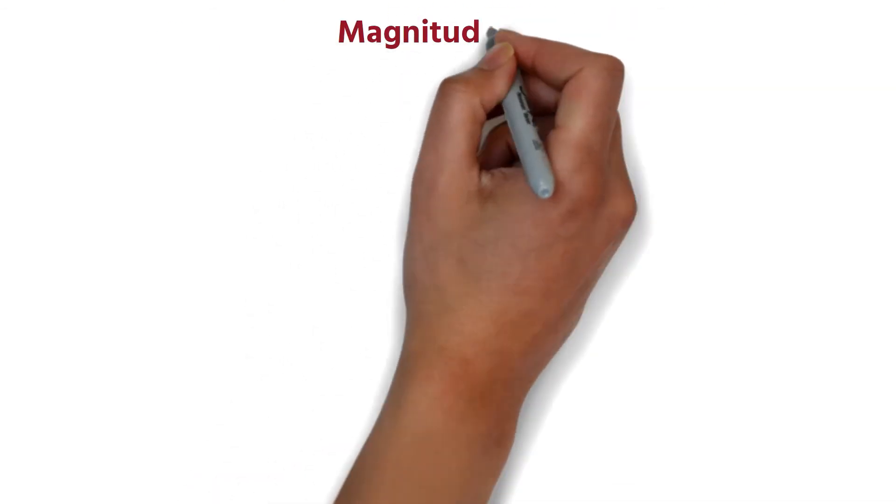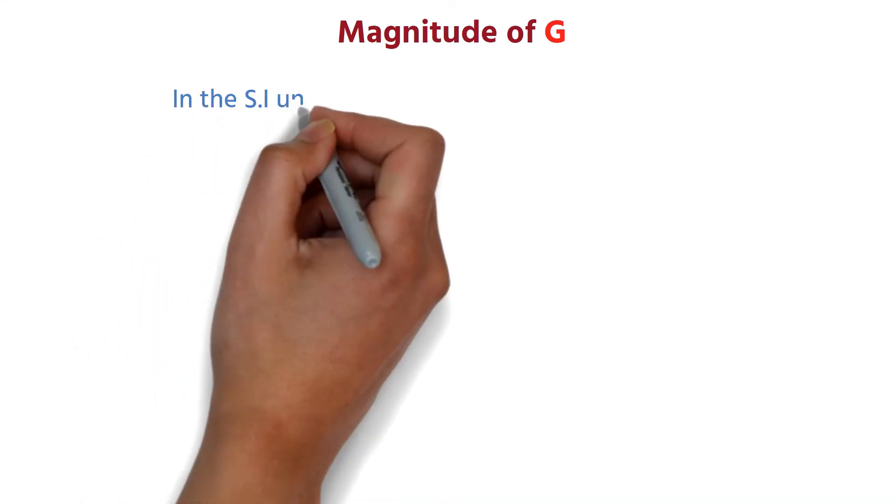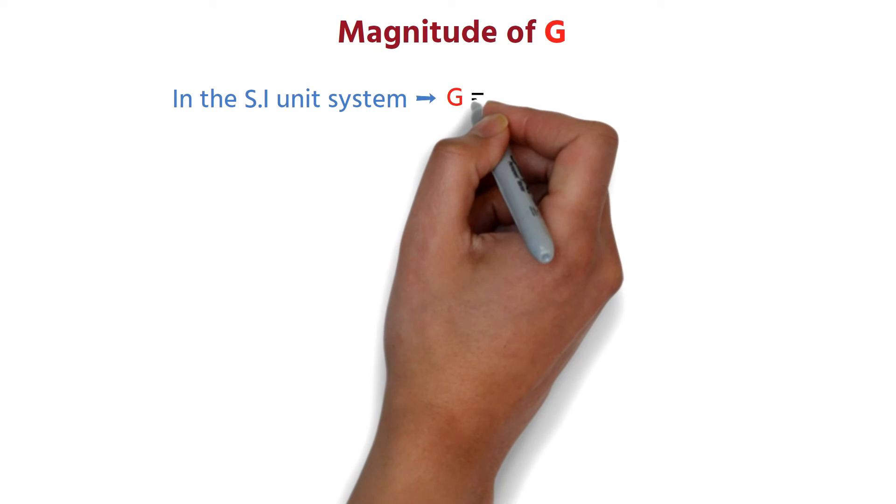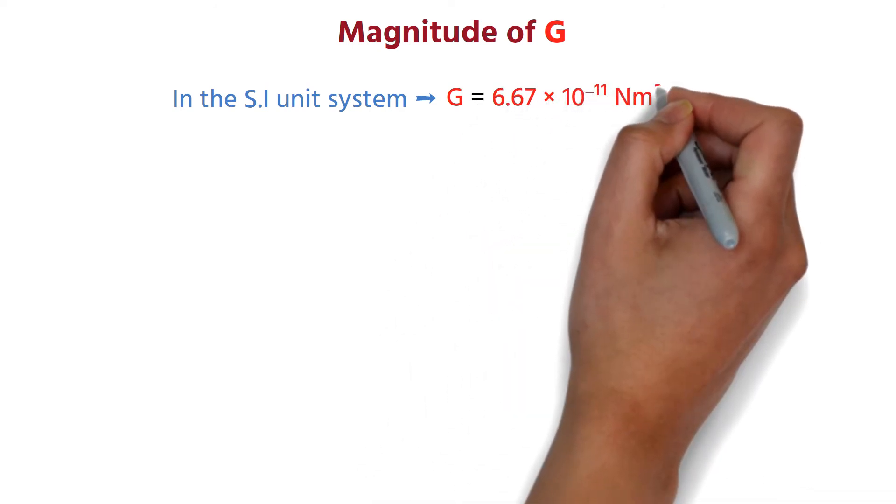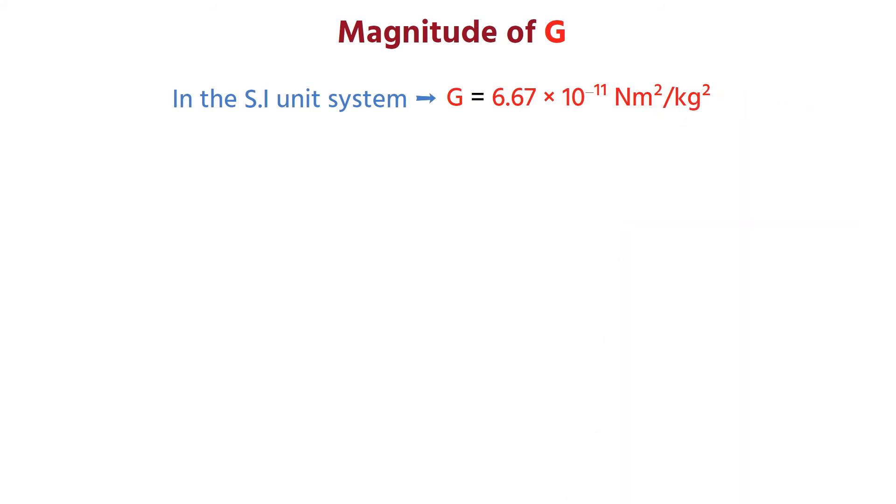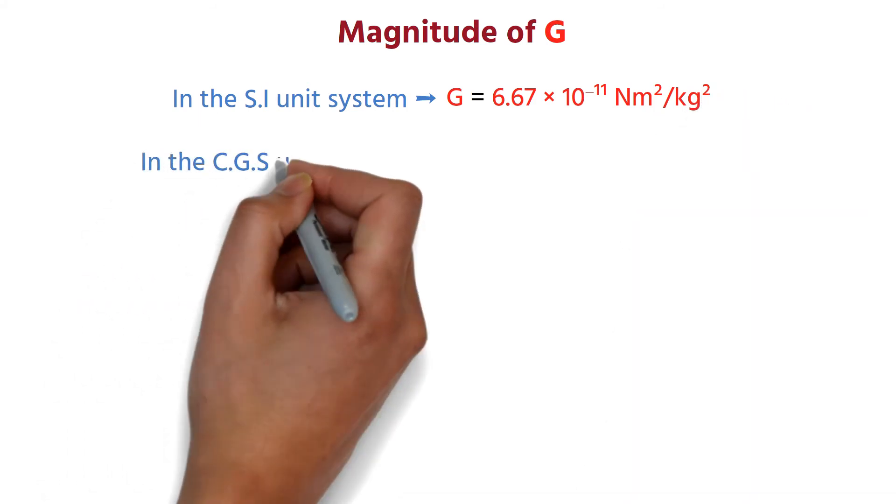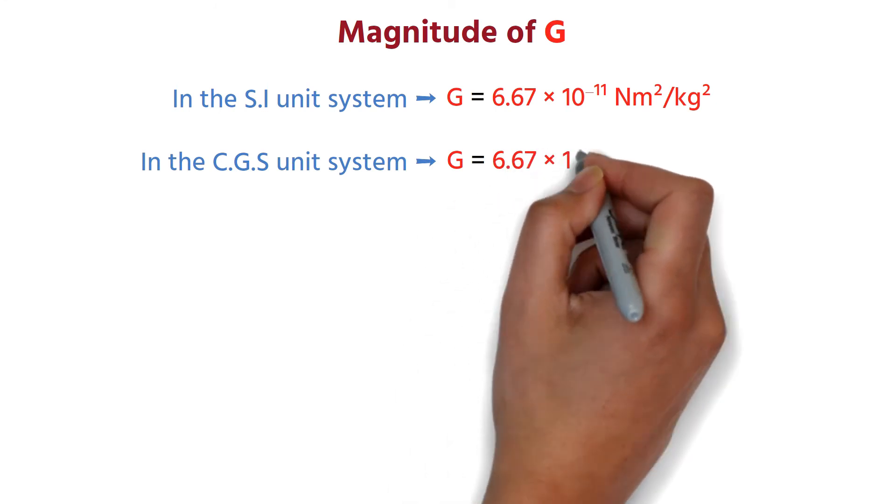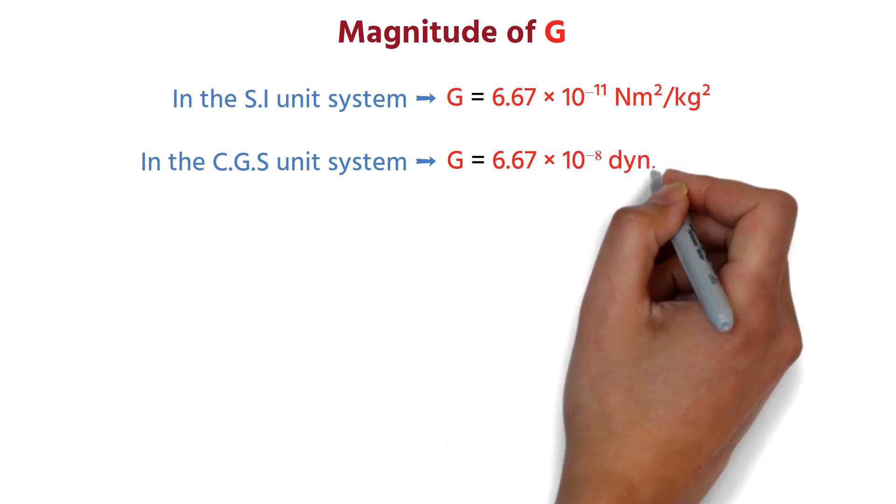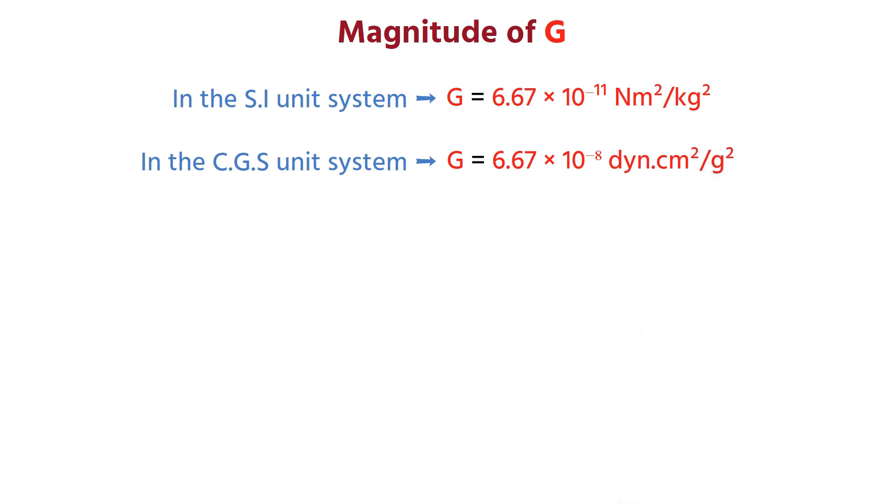If we talk about the magnitude of G, then it is determined by various experiments. In the SI unit system, we find G equals 6.67 into 10 to the power minus 11 newton meter square per kilogram square. And in the CGS unit system, we find G equals 6.67 into 10 to the power minus 8 dyne centimeter square per gram square.